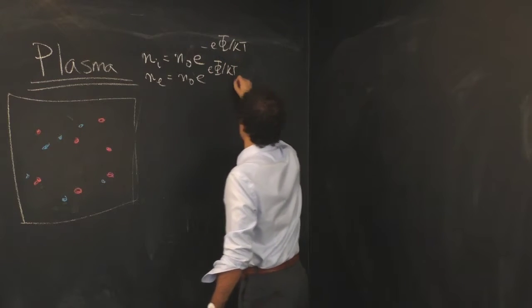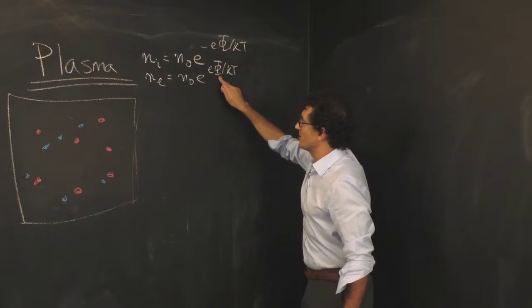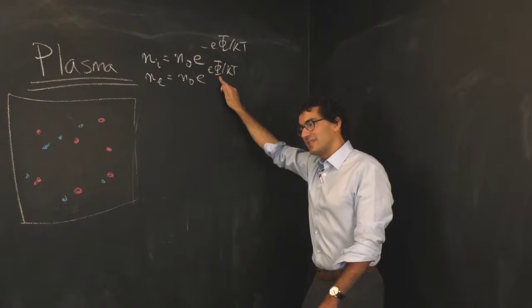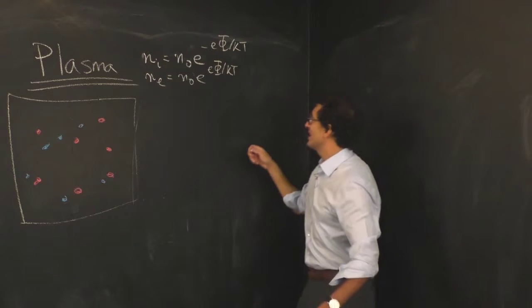The electrons are less and less likely to be found at places where the potential is negative, and the negative potential is generated by other electrons. So another way to say this is electrons don't like to be too close together.